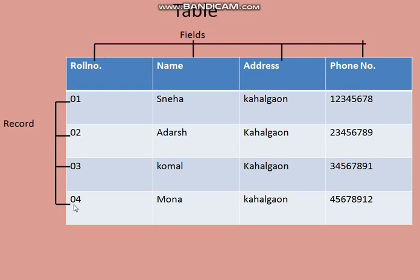The row number field is of type number. The address field uses text — you can write alphabets and numbers in text, but you cannot calculate with it. For phone number, we use the numeric data type.